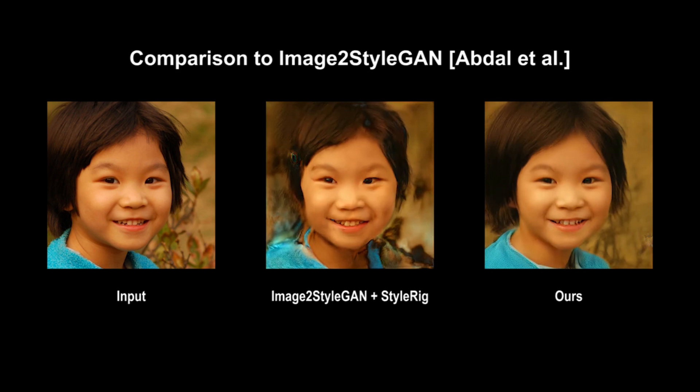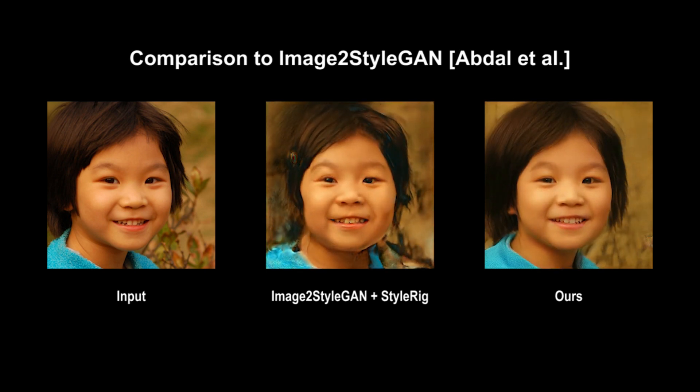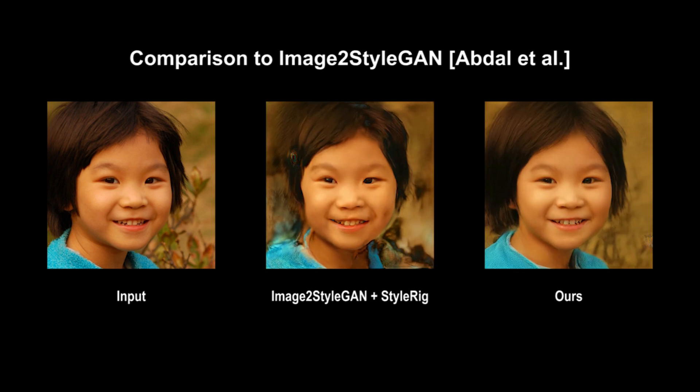Image to StyleGAN produces a high quality embedding of an image, but this embedding often leads to artifacts when used with StyleRig.